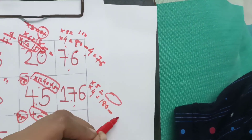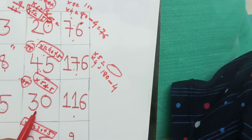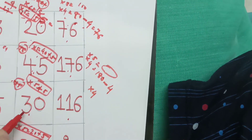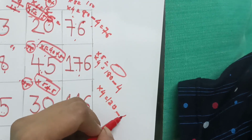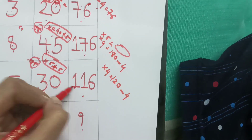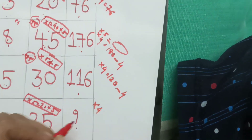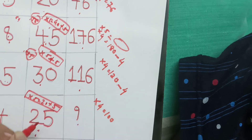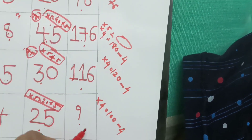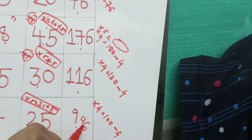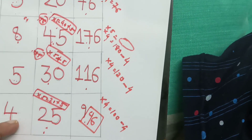In the same way, multiplying by 4 and subtracting 4: we get 120 minus 4 gives 116. Then multiply by 4 to get 100, and subtracting 4 gives 96. The answer is 96. Got it? Thank you.